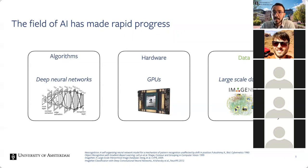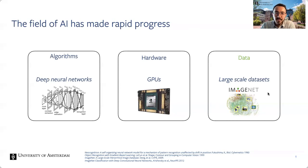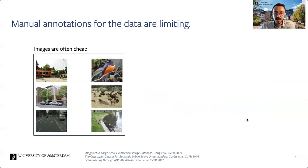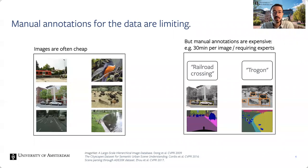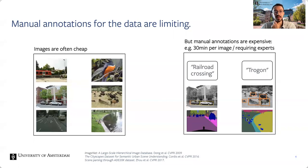Progress in AI is driven by three ingredients: novel algorithms, better hardware, and large-scale datasets. I would argue the most important ingredient is the data. This data is made up of two parts: first, the raw data such as images and videos, which are ubiquitous — every Tesla car records its surroundings yielding massive amounts of data. But the second part are the annotations that tell the model what is what — for example, labels per image or specifying which pixels belong to the road or to parked cars.